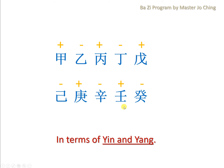In terms of Yin and Yang, JIA is Yang, followed by Yin, then Yang, then Yin, then Yang, so on and so forth — alternating throughout the ten stems.